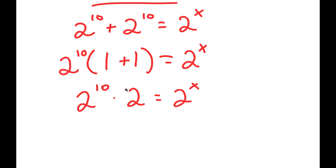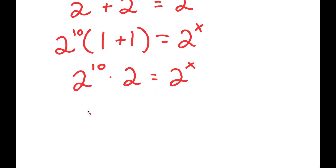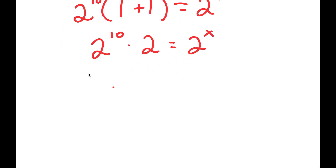A simpler way of doing this — instead of factoring it out — we have two 2 to the power of 10s here, and anything added by itself is the same thing as that number times 2. So we could have just said 2 to the power of 10 times 2 at the beginning. From here, I can solve this in two methods.